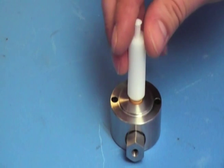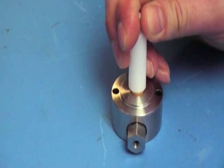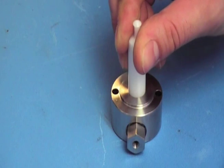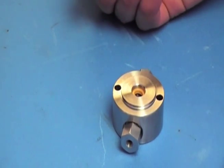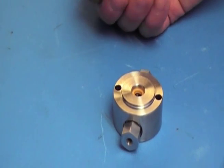Try to get it as flush as possible, apply pressure, and then the seal is installed.